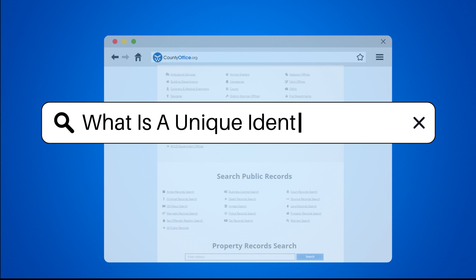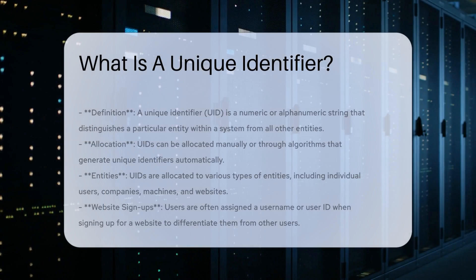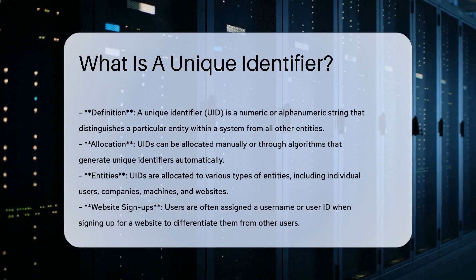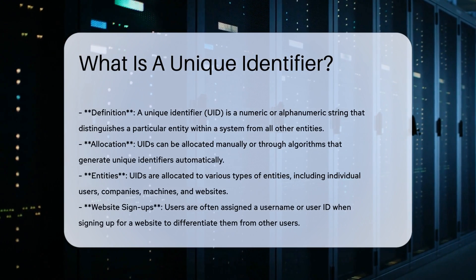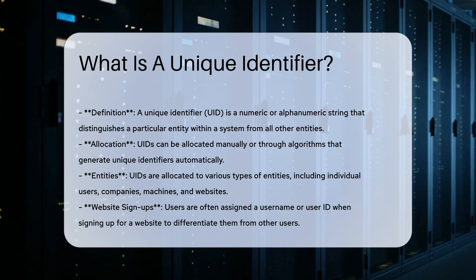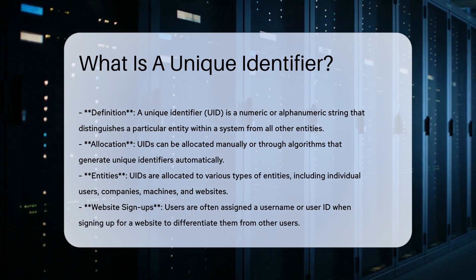What is a unique identifier? A unique identifier, or UID, is a numeric or alphanumeric string that distinguishes a particular entity within a system from all other entities.